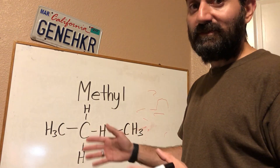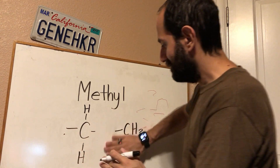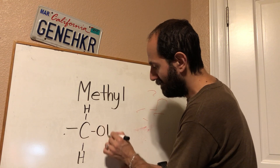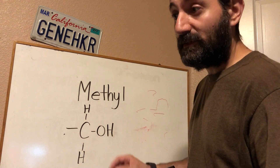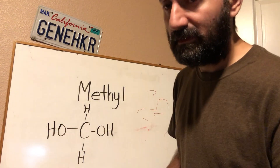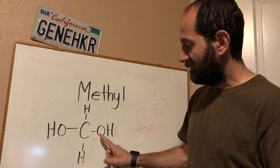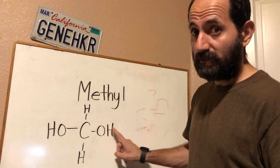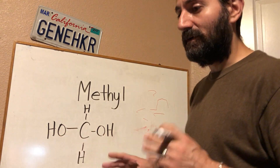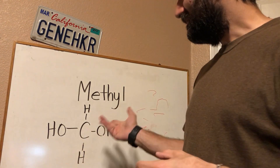The same thing applies to a hydroxyl group. If there's a hydroxyl group on the right side of the molecule, you write OH; if it's on the left side, you write HO. Both are OH groups, both are hydroxyl groups. On the right side it's written OH because the C is bound to the O, and the O to the H. On the left side it's HO because the H is bound to the O, and the O is bound to the C. Just a little extra tip to clarify.